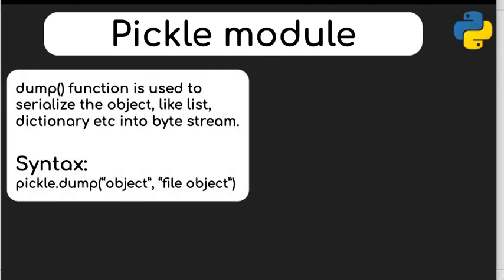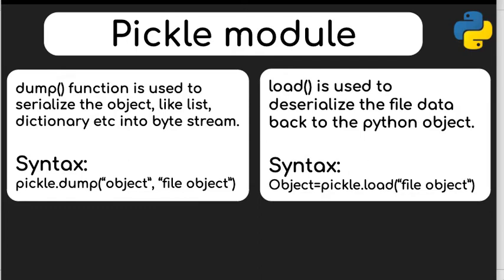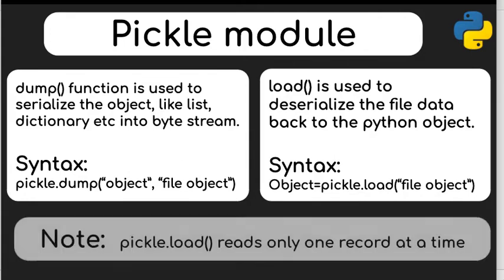In this video we will study two important functions responsible for adding and extracting data in a binary file. The first is the dump function, which is used to serialize data — it takes data from a Python object and stores it into a file using pickle.dump. The second is the load function, which deserializes the data stored in the file, one record at a time.